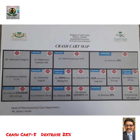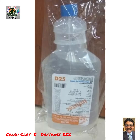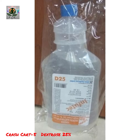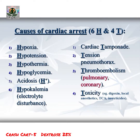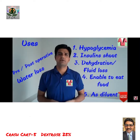The crash cart contains 17 drugs for emergency use. Today we are going to talk about 25 percent dextrose, D25. The concentration is 250 milligram per ml. For children six to eight years of age, the dose is two to four ml per kg. Always exclude hypoglycemia — 30 to 60 milligram percent depending on the age.